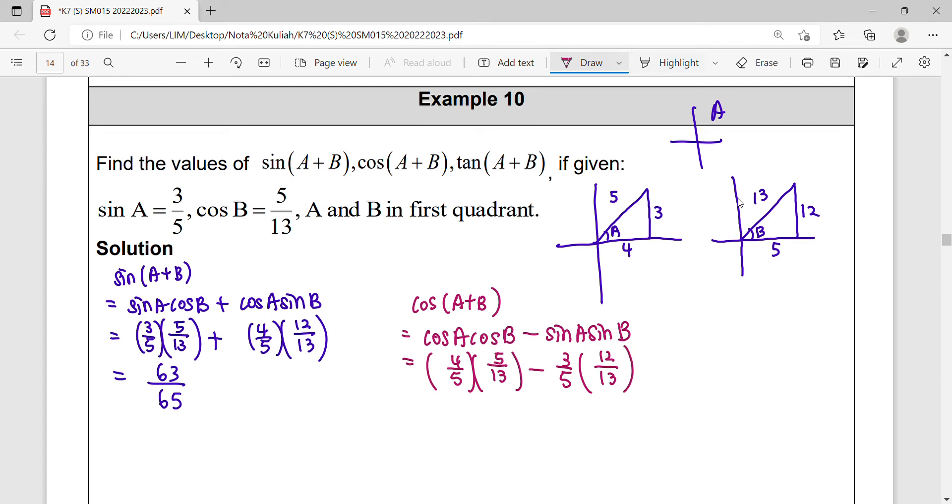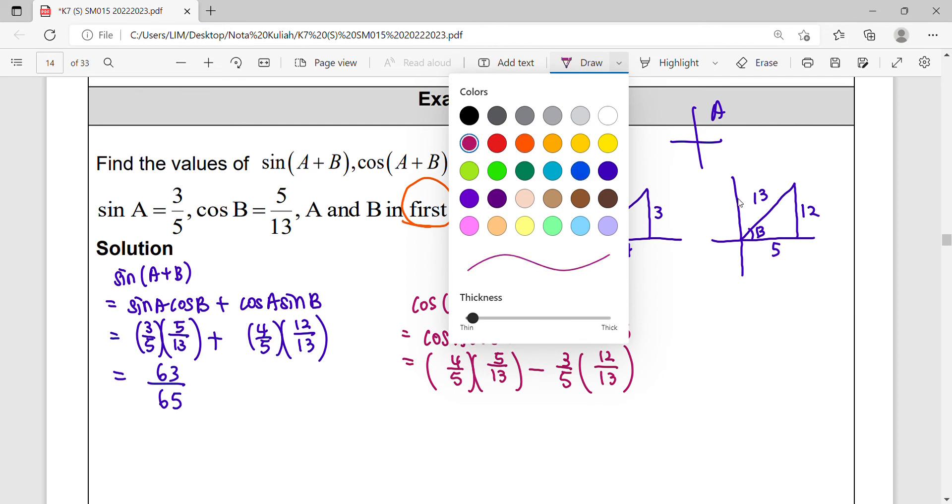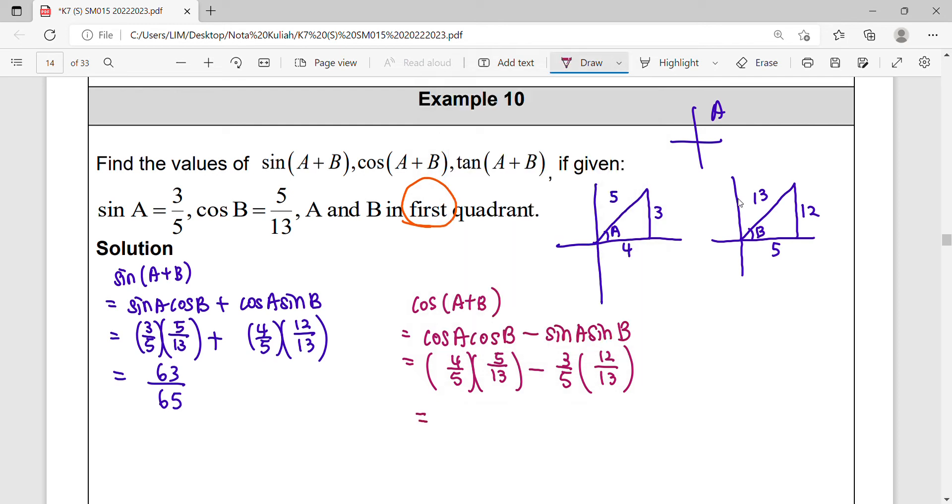All in positive value because of first quadrant. So our value all in positive. Simplify this operation of this ratio, negative 16 over 65. Is it correct?